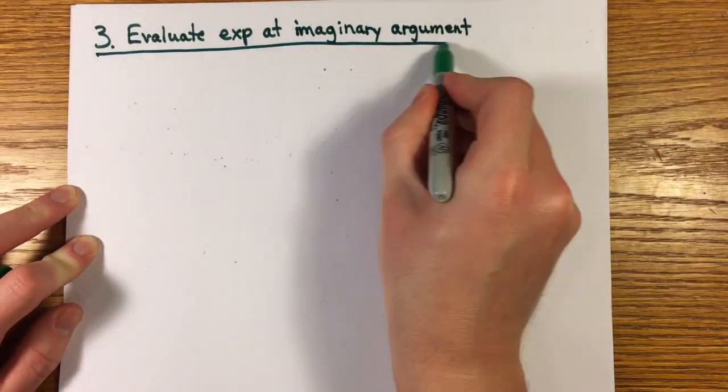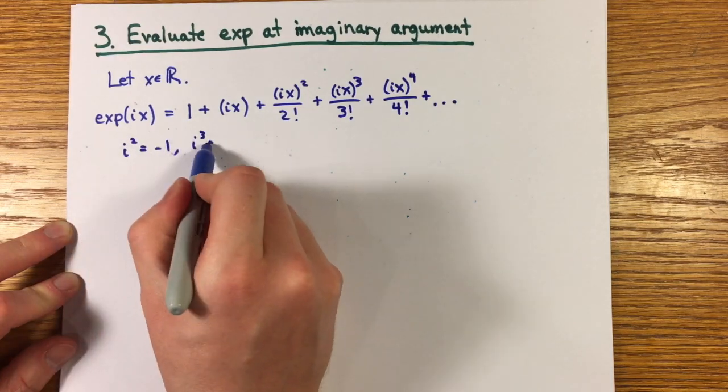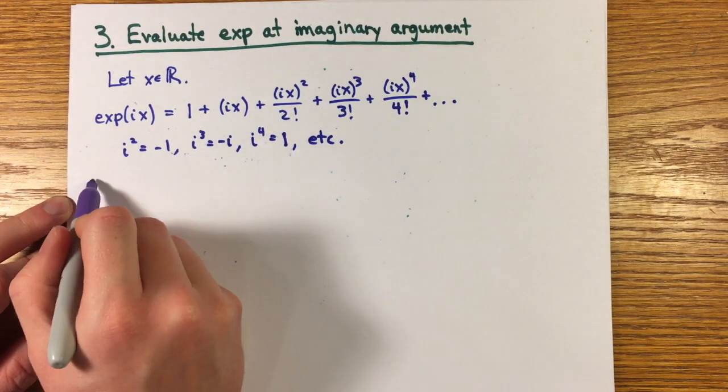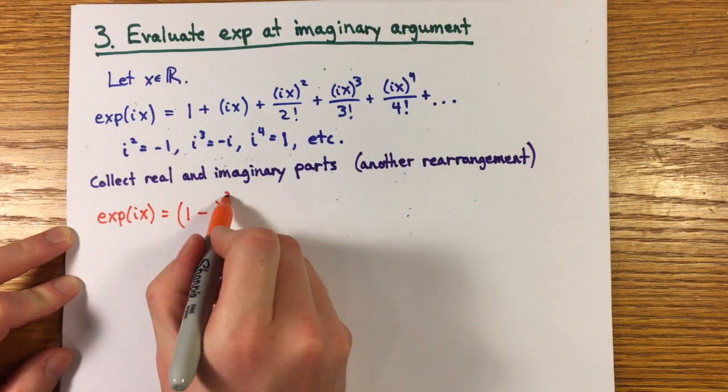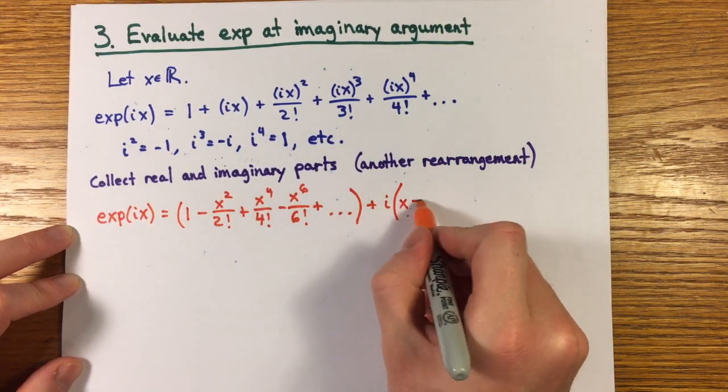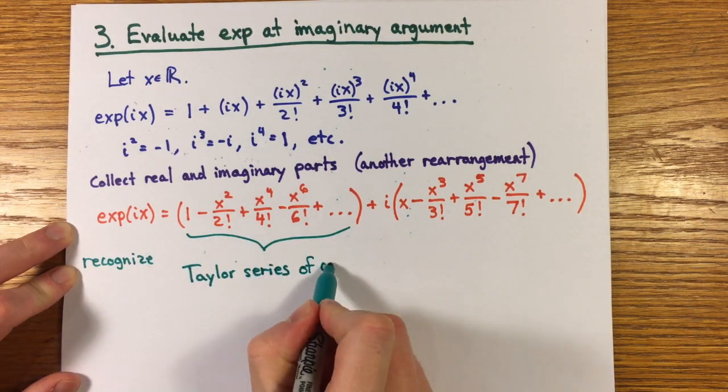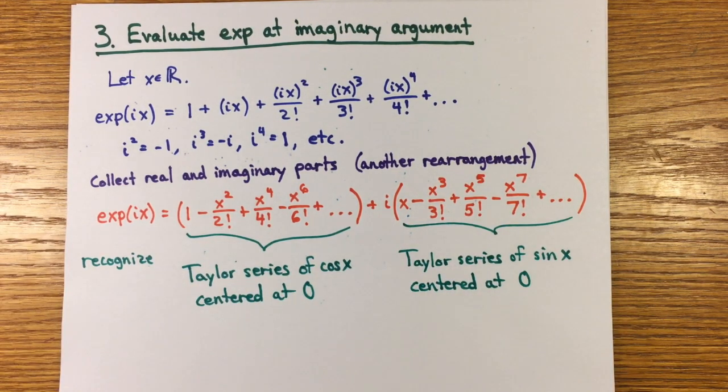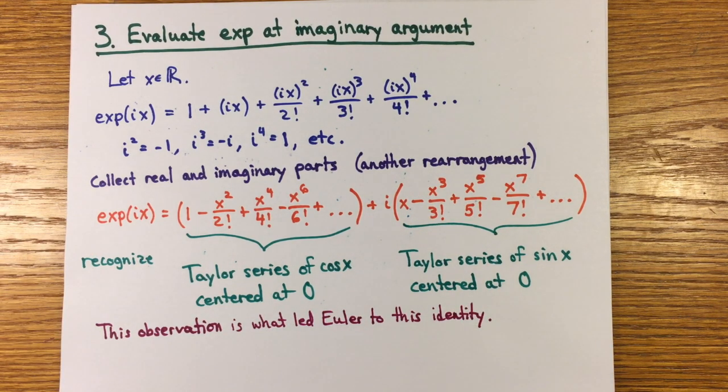Now, if you plug in a purely imaginary argument into the exponential series and collect the real and imaginary terms, again, this rearrangement is justified by absolute convergence of the exponential series, you'll notice that the real part is the Taylor series of cosine centered at zero and the imaginary part is the Taylor series of sine centered at zero. This is indeed how Euler first came upon this identity.